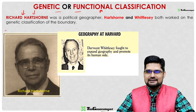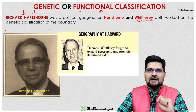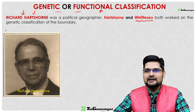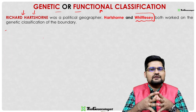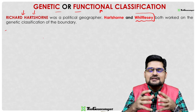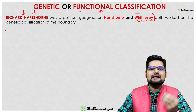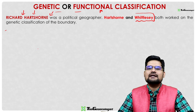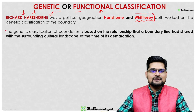Alongside Hartshorne, another scholar — Whittlesey — is also associated with this classification. You may know Whittlesey's name from the concept of sequent occupance or agricultural classification. Both these geographers are well known for the areal differentiation approach and regional geography concepts of the 1930s. Richard Hartshorne is specifically known for the genetic or functional classification of political boundaries.